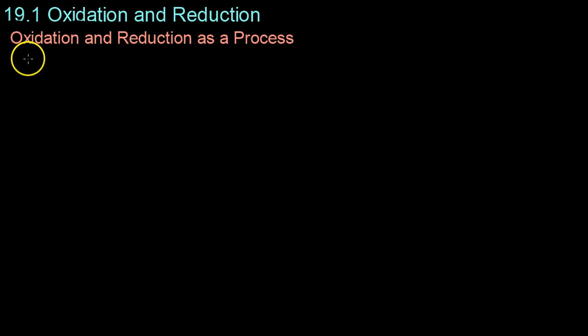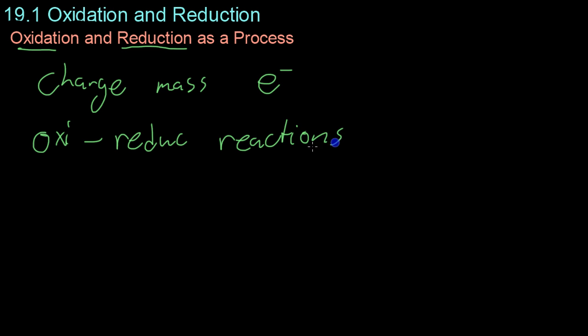Moving on now, we're going to be combining the two to look at oxidation and reduction as a process. As we've already discussed, due to the laws of conservation of charge and mass, if an oxidation reaction occurs, a reduction reaction must also occur. Basically, in order to conserve the mass and charge of the electrons, if one happens, the other has to happen. In other words, if you lose an electron here, you have to gain an electron here in the reduction. Combined, these are known as oxidation-reduction reactions, sometimes abbreviated as redox reactions.